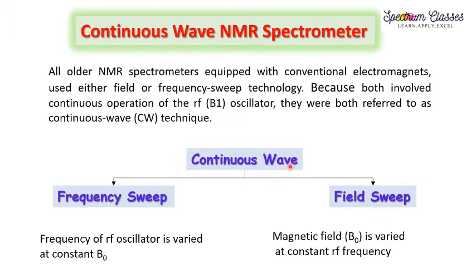A question arises: why do we call it a continuous wave NMR spectrometer? The reason is that in both kinds of spectrometers, the continuous operation of the radio frequency oscillator is required. That is why both types of spectrometers are referred to as continuous wave techniques.